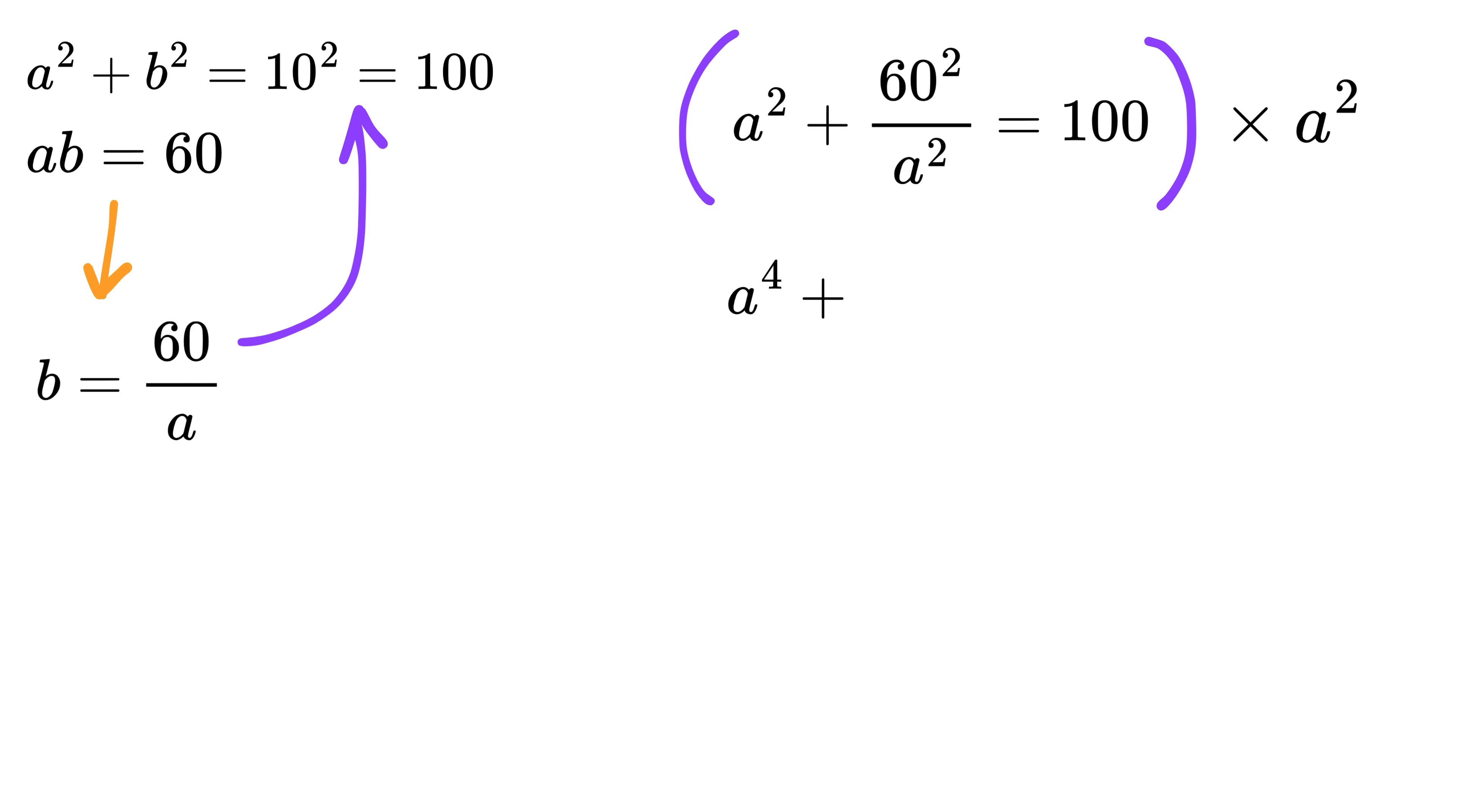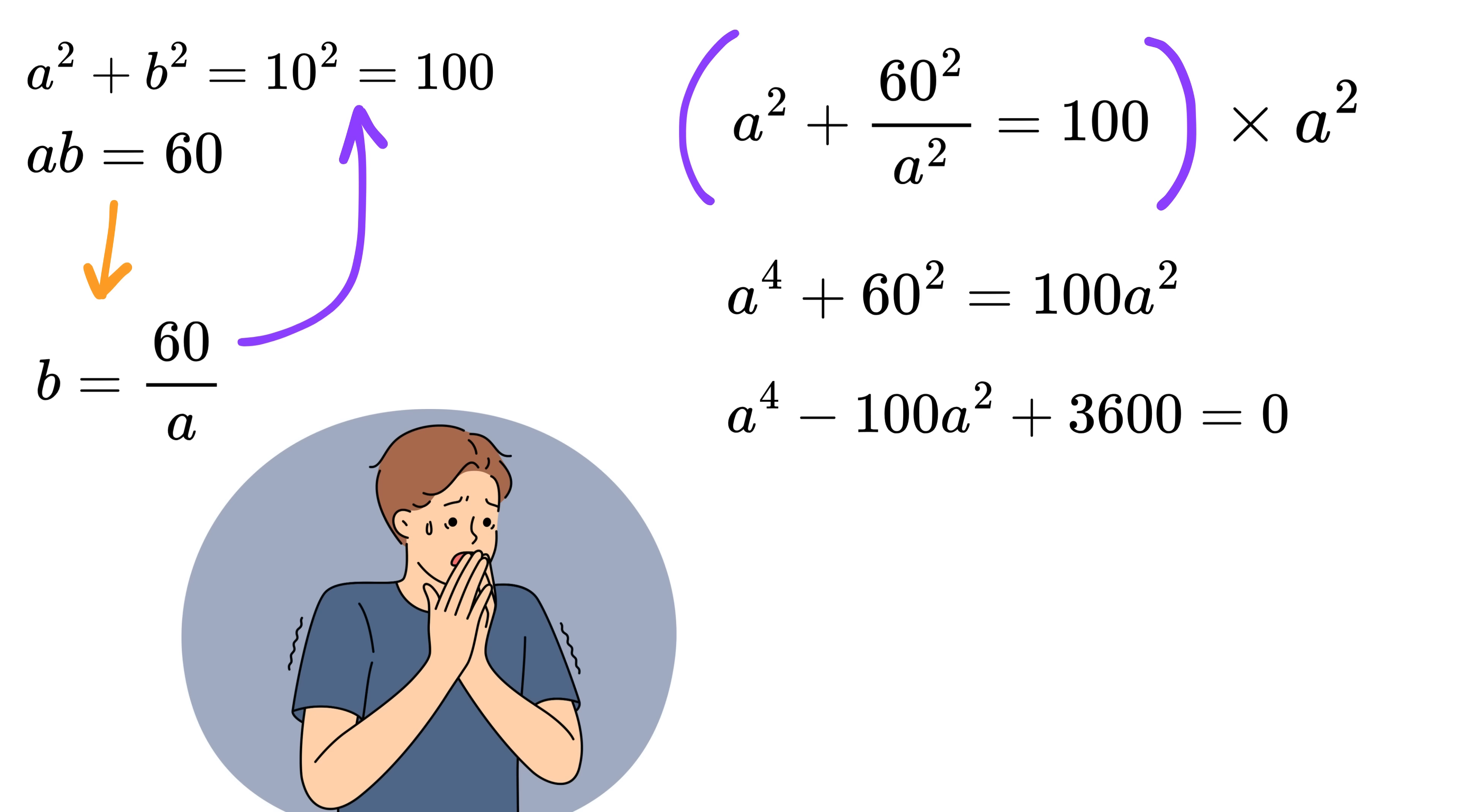You get A to the power 4 plus 60 square equals 100 times A square. Let's bring everything to the left side. We get A to the power 4 minus 100 A square plus 3600 equals 0. Now this looks scary, but wait.